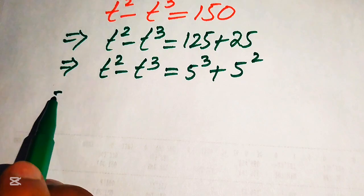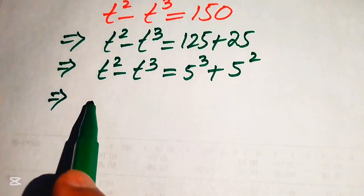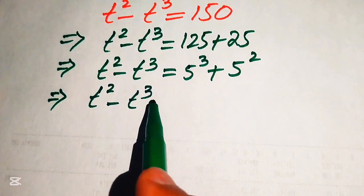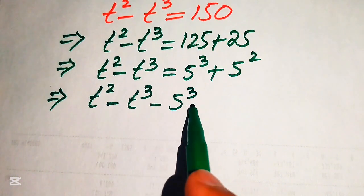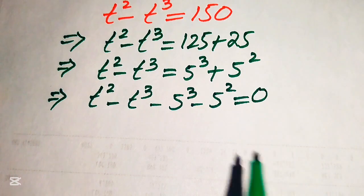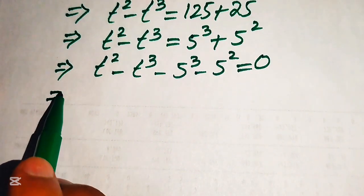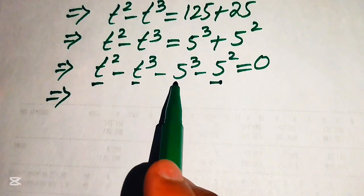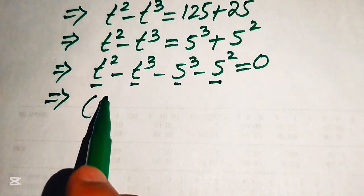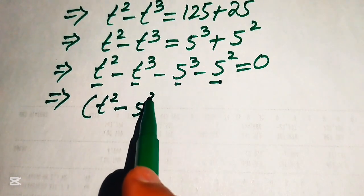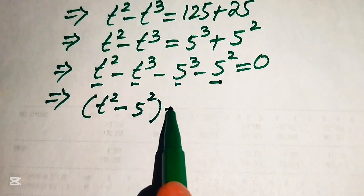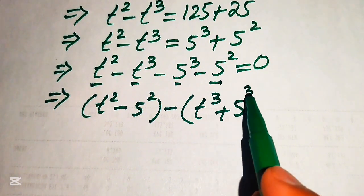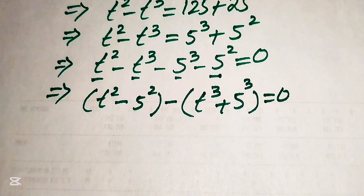In the next step, we move both values to the left-hand side: t squared minus t cubed minus 5 cubed minus 5 squared equals 0. Now we pair t squared with 5 squared and t cubed with 5 cubed, taking a common negative sign to get t squared minus 5 squared, minus the quantity t cubed plus 5 cubed, equals 0.